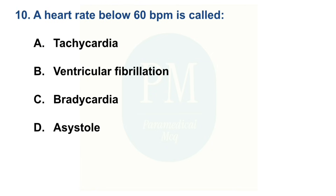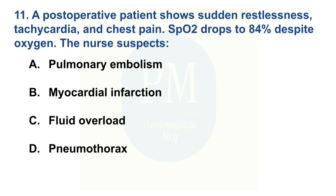A heart rate below 60 BPM is called: Option A: Tachycardia. Option B: Ventricular fibrillation. Option C: Bradycardia. Option D: Asystole. The correct option is Option C — Bradycardia.